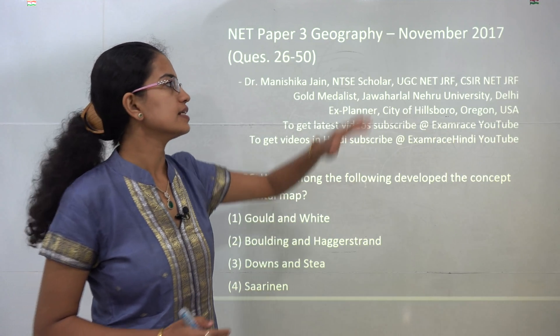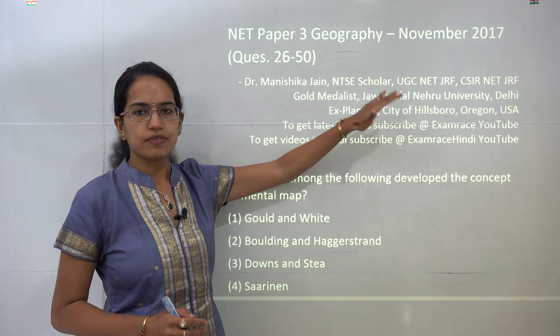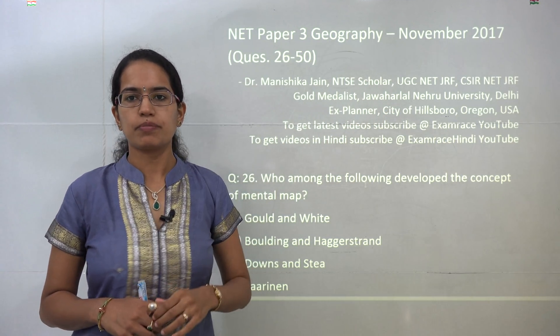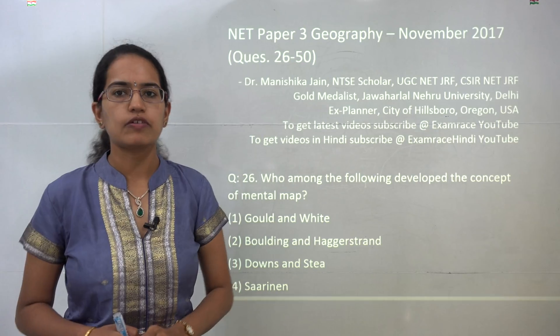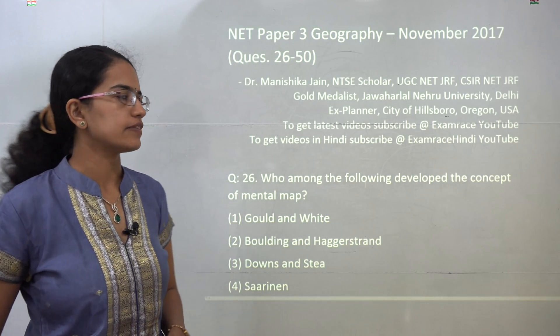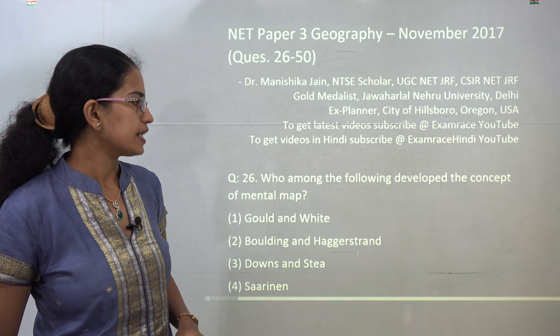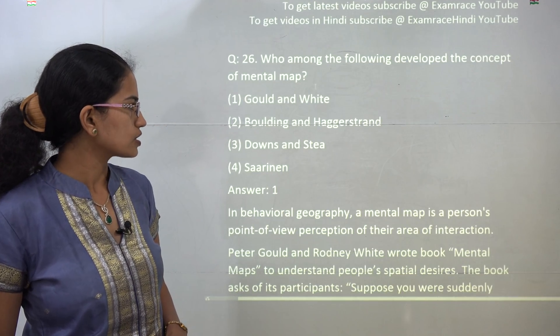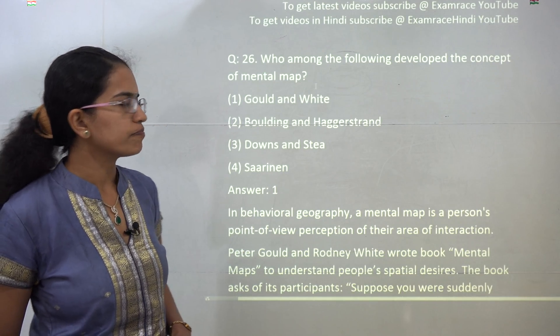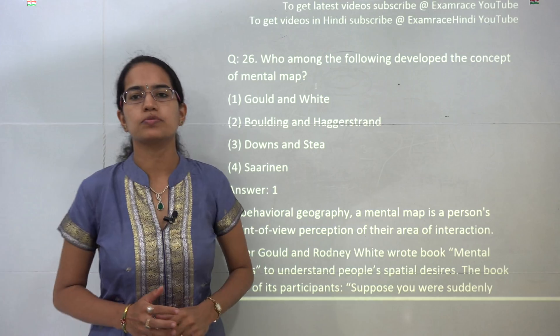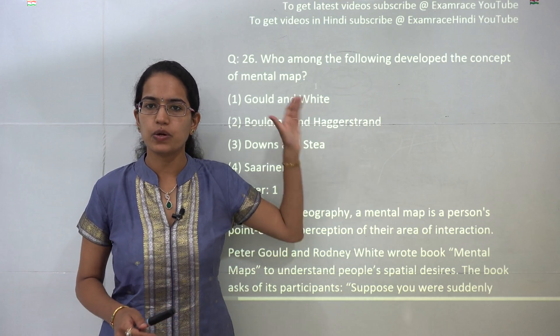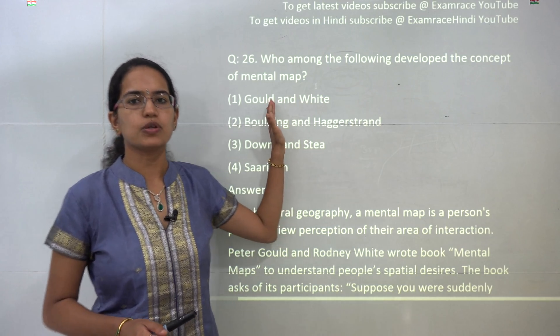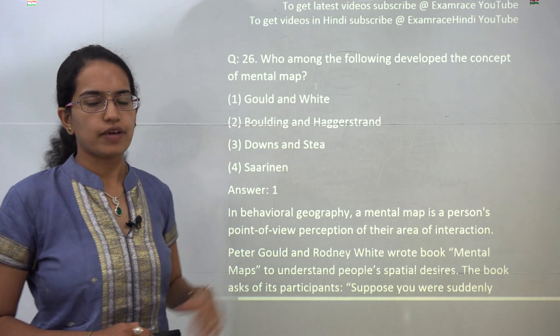Welcome back. We will understand the next 25 questions for Paper 3 Geography November 2017. The very first question talks about the idea of mental map, which is propounded by Gold and White in their book. So Gold and White would be the correct answer.